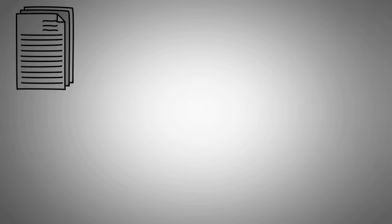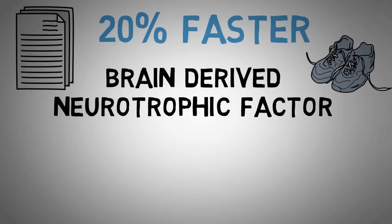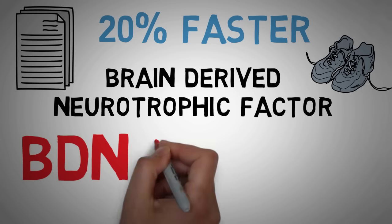A 2007 study found that people learn vocabulary words 20% faster after exercise compared to when they remain sedentary. This is all thanks to a protein called brain-derived neurotrophic factor, also known as BDNF.